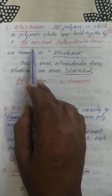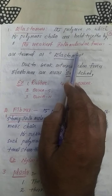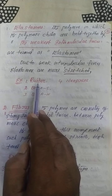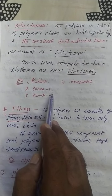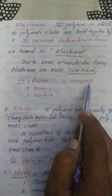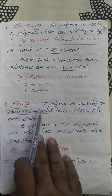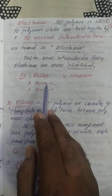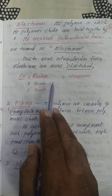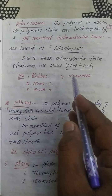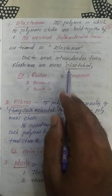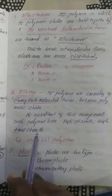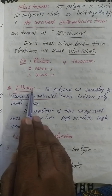Examples of elastomers — polymers with the weakest intermolecular forces — are rubber, Buna-S, Buna-N, and neoprene. Don't forget these examples, as they are important at all competitive entrance levels. Elastomers have weak intermolecular forces between the monomers, making them more stretchable.